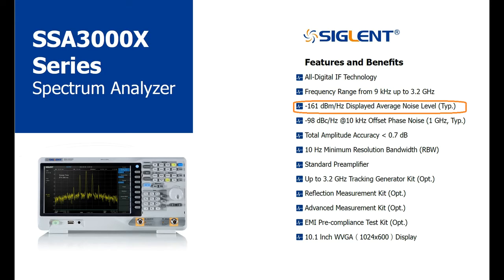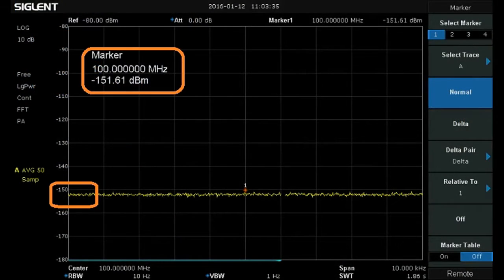DANL stands for displayed average noise level and it indicates the noise floor of the instrument. Lower noise floor values enable you to observe lower power signals. This is especially important when you are hunting for harmonics of a signal or potential interference sources. The SSA 3000X has a DANL of minus 161 dBm per hertz typical. The written spec is commonly normalized to 1Hz so the displayed noise floor of the instrument is typically near minus 151 dBm in actual use as we see here.